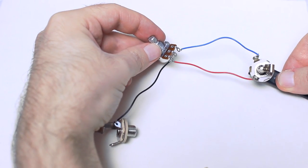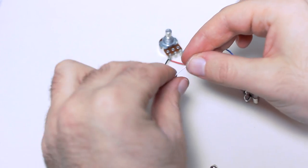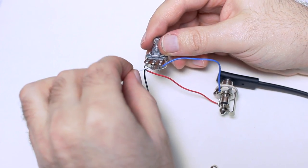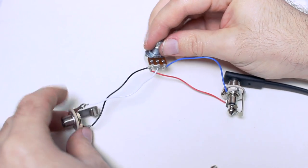And the outer contact of output jack connect to the middle contact of potentiometer. The electronic part is ready.